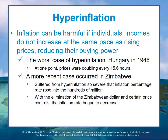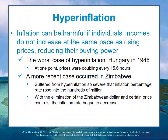Inflation can also be harmful if it runs out of control. If individuals' incomes don't increase at the same pace as prices, people actually start buying less. Hyperinflation can be extremely severe — the worst case was in Hungary in 1946, where prices doubled every 15.6 hours. In the Weimar Republic, people used wheelbarrows of cash to buy products. As prices rise quickly, people rush to buy before prices go up further, which drives prices up even more — an additional self-reinforcing cycle.